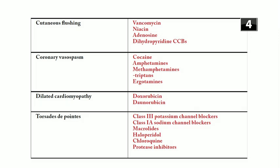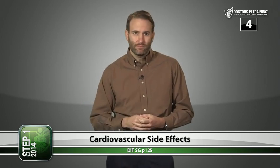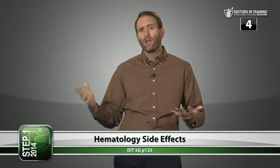Other drugs that prolong the QT interval — ones you need to remember: macrolides, haloperidol (an antipsychotic), chloroquine (an anti-malarial), and protease inhibitors for HIV. Treatment for torsades: push IV magnesium.